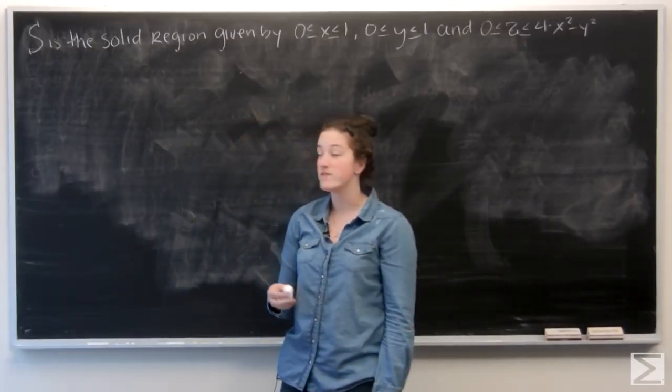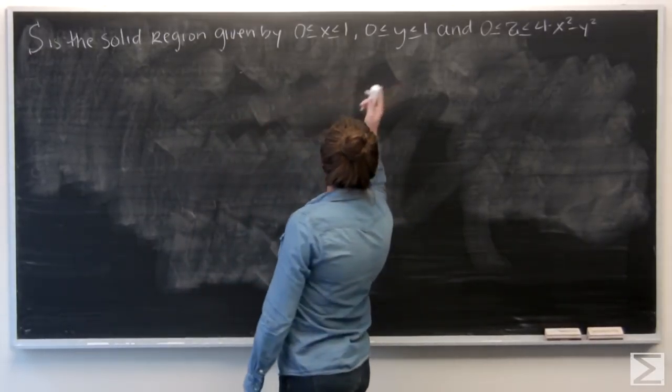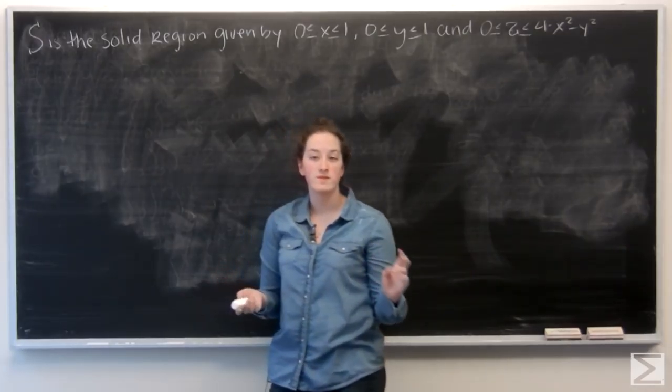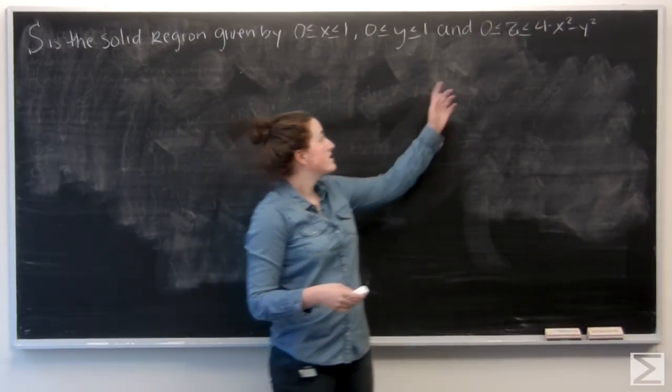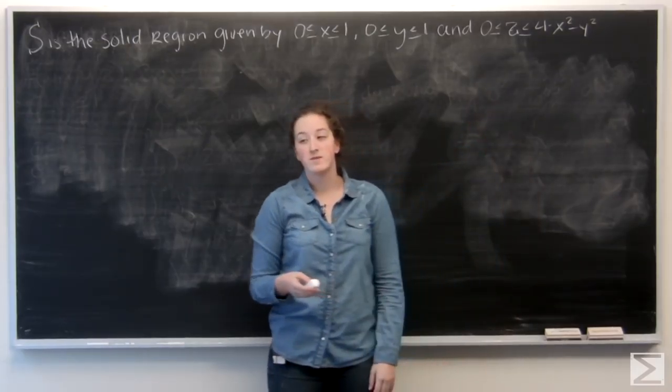So for this problem, we're given a solid region S bounded from 0 to 1 for x and y, and then 0 to 4 minus x squared minus y squared for z.